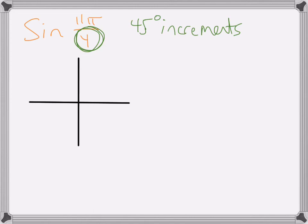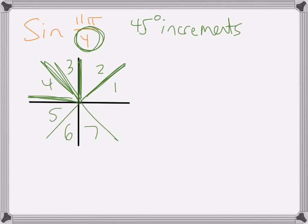And if it's 45 degree increments, this would be 1, 2, because this is 45 degrees each. So 3, 4, 5, 6, 7, 8. So I have 8 pieces, or 8 45 degree pieces in one full rotation. And so if I kept going, this would be 9, 10, 11.